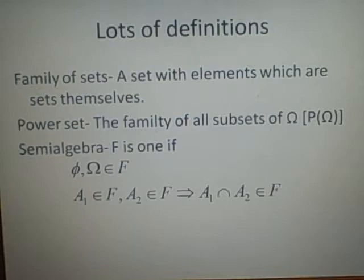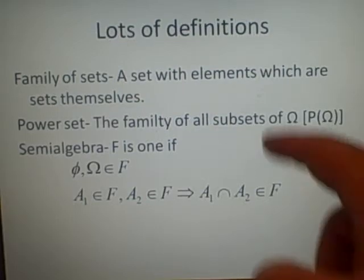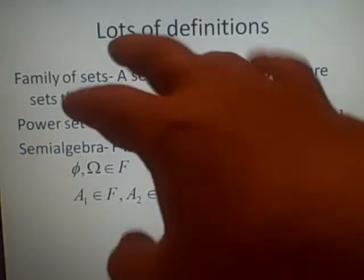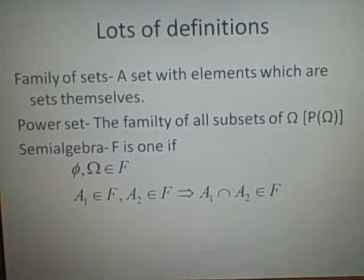Families of sets: this is a set with elements which are also sets. So we write down a set with curly brackets, so you'll have curly brackets within curly brackets. The power set is the family of all subsets of Ω, and it's written P(Ω).